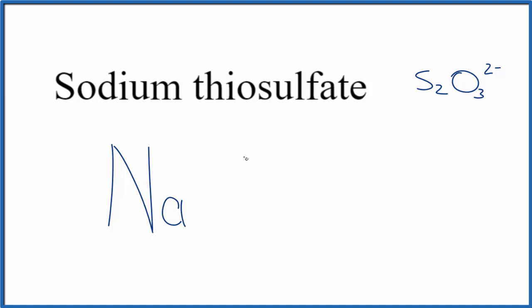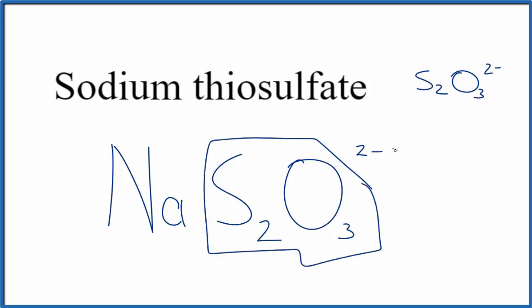Our thiosulfate ion, S2O3 2-minus. Since we have a metal and a group of non-metals, this is an ionic compound, so we have to think about charge. We know that this entire thiosulfate ion, the whole thing, has that 2-minus charge. Sodium, that's in group one on the periodic table, that's going to be 1+.